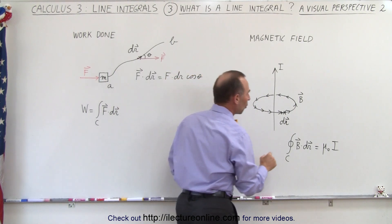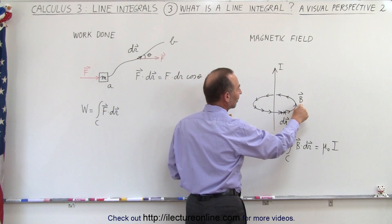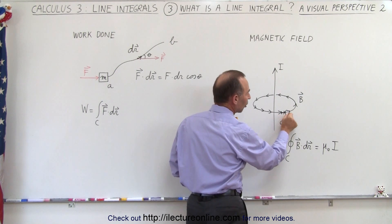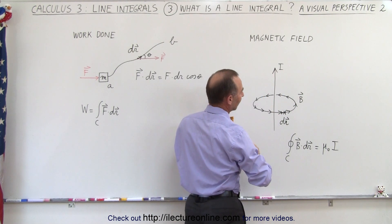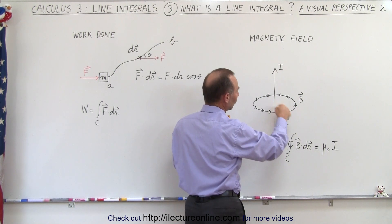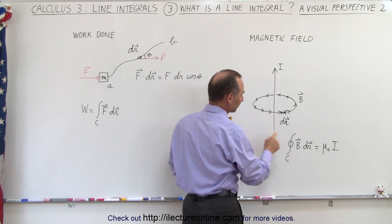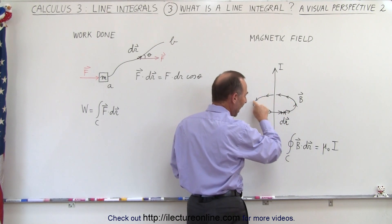Now, what happens when we multiply the magnetic field times the displacement along a particular path at a particular distance, at a particular radius? When we travel along the path...